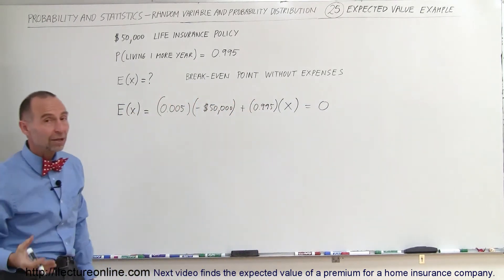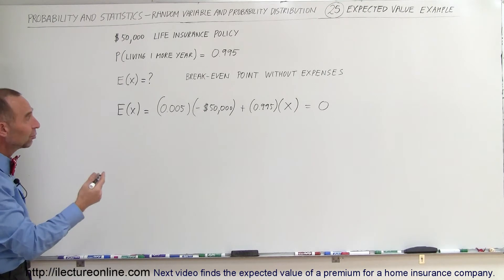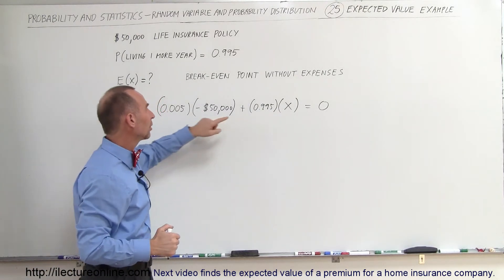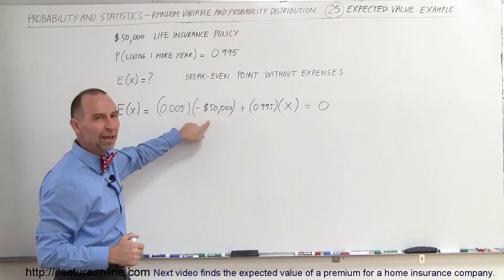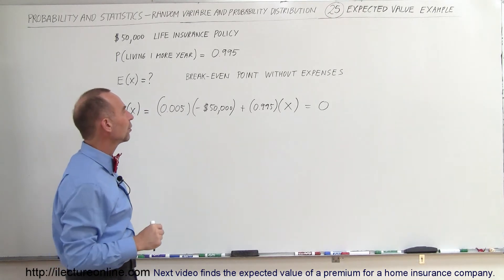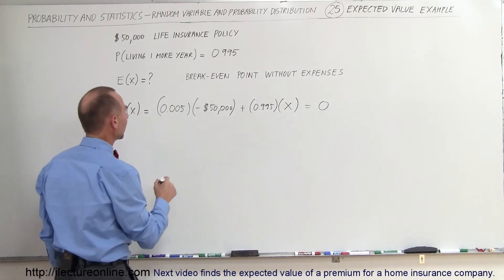That's the expected value. So now what x would be, what would the premium have to be so that they could cover all the expenses that they would have to pay for people of your gender and your age. Okay, let's go ahead and work that out.